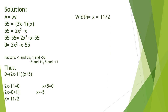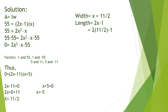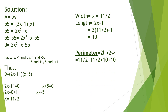The width is 11 over 2, so we can find the length: 2 times 11 over 2 minus 1 equals 10. We are asked to find the perimeter, so perimeter equals 2 times the length plus 2 times the width. It becomes 11 over 2 plus 11 over 2 plus 10 plus 10, which equals 31 meters.